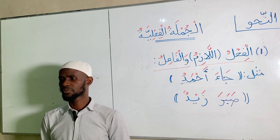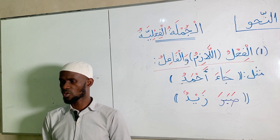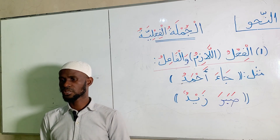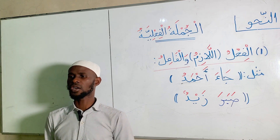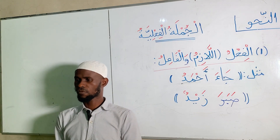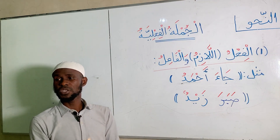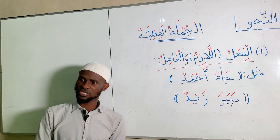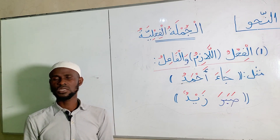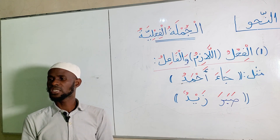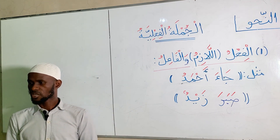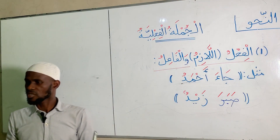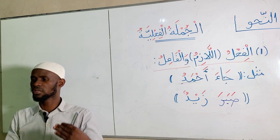In Arabic language, an action cannot stand on its own. Somebody has to perform the particular action, and that is al-fa'il. So minimum you have al-fi'l and al-fa'il. Al-fi'lul-lazim is a special verb called the intransitive verb. It does not need to have a direct object. So by mentioning the al-fi'l and al-fa'il, the sentence is complete and the listener understands the sentence.